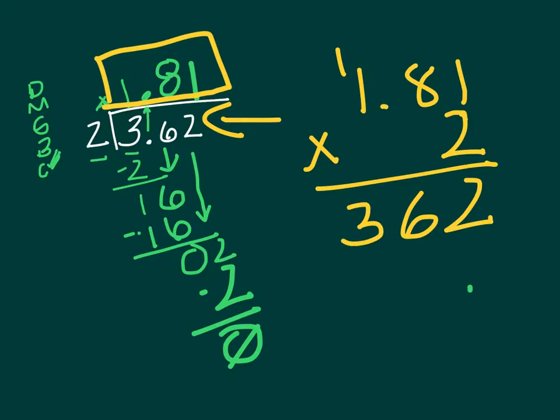And see how like on multiplication we don't really count the decimal places until after? It's 2 decimal places. So what? So the answer is the same, 3 and 62 hundredths. Good job!